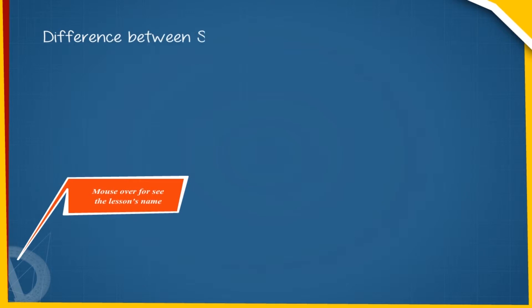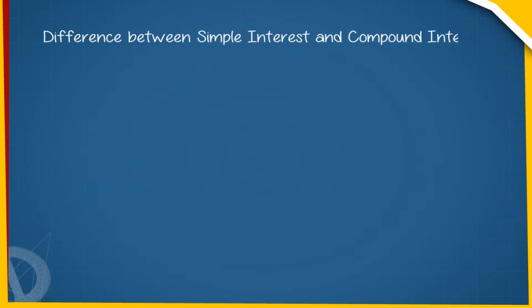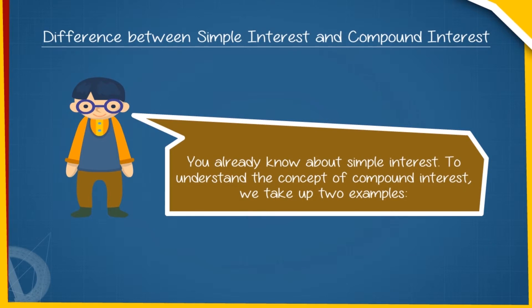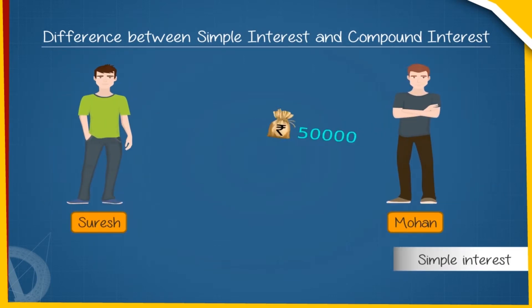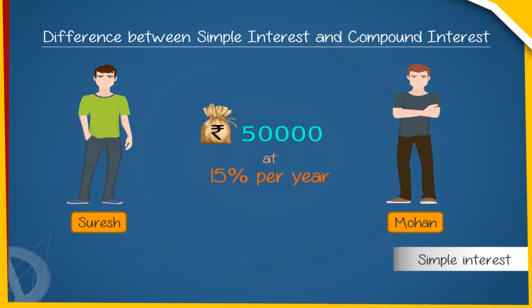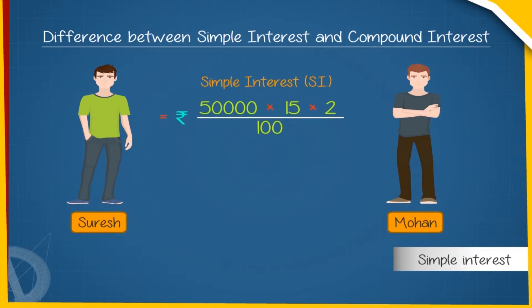Difference between Simple Interest and Compound Interest: You already know about Simple Interest. To understand the concept of Compound Interest, we take up two examples. Simple Interest: Suresh borrows Rs. 50,000 from Mohan at 15% per year. Simple Interest for two years: SI equals Rs. 50,000 into 15 into 2 upon 100 equals Rs. 15,000.